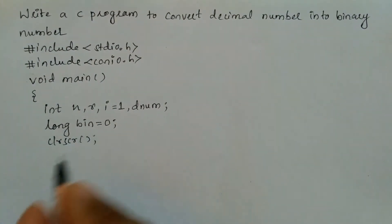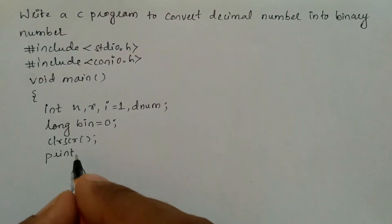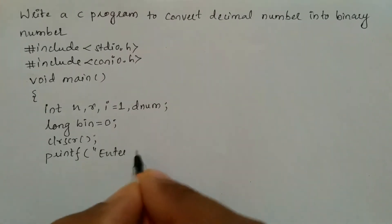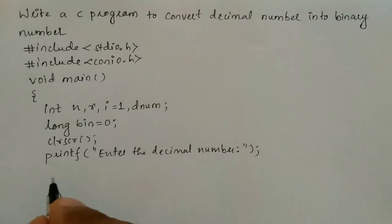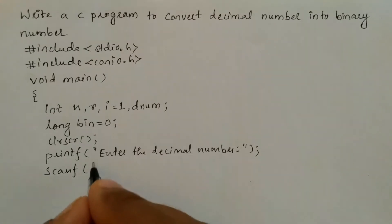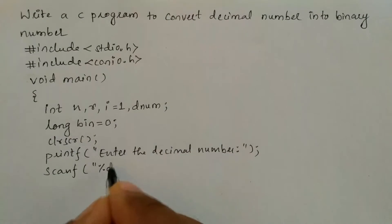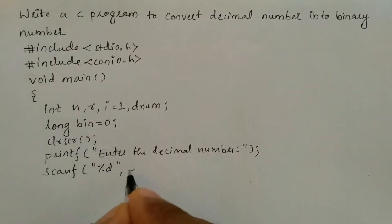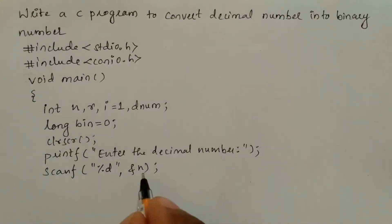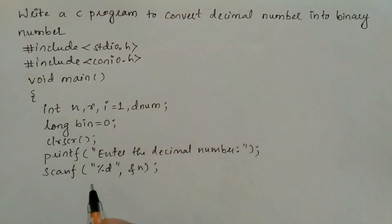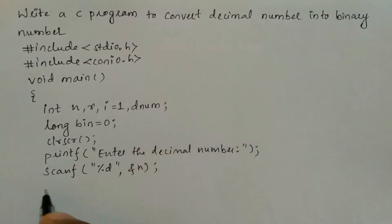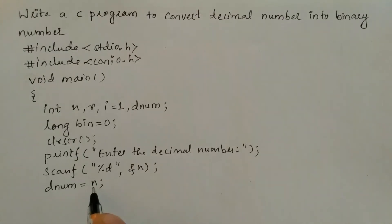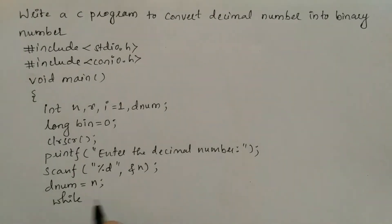Now we'll write the clrscr function, then a printf to prompt the user: "Enter the decimal number". We receive the decimal number using scanf with format specifier %d and ampersand n. Then we initialize the value entered by the user to denum, so denum is equal to n, preserving the original input for display later.